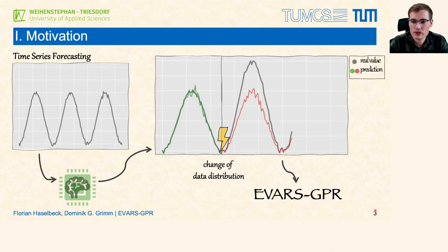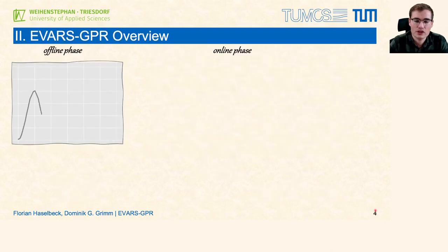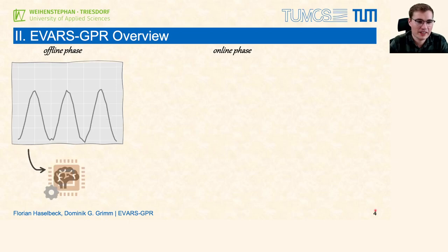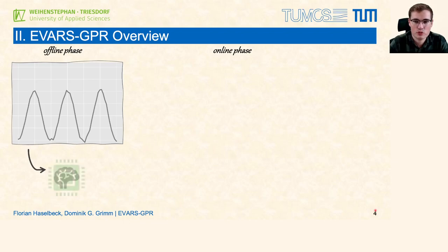And that's where EVOS GPR comes into place. We focus on seasonal time series and changes of the output scale, and try to solve the problem of changing data distributions during the online phase. During the offline phase EVOS GPR is identical to the common approach: we first collect historical time series data and train our initial prediction model.